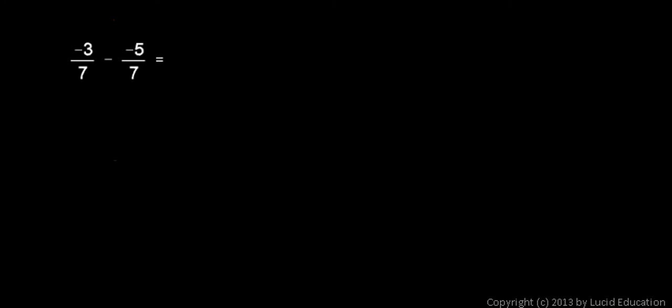Negative 3 over 7 minus negative 5 over 7. I'm going to rewrite the problem to say negative 3 over 7, and instead of subtracting that, I'm going to add the opposite of that. And the opposite of negative 5 sevenths is positive 5 sevenths. And that's a little bit easier to do in my mind. Instead of saying negative 3 minus negative 5, I find it a little easier to think about written this way, negative 3 plus 5.